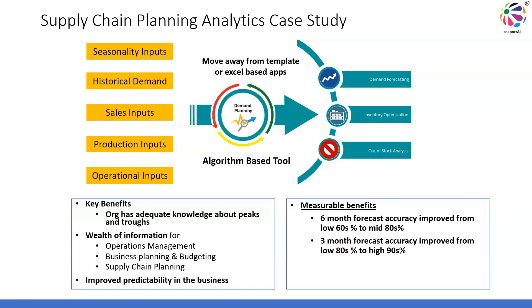Even if you have a hundred or a thousand people working in such a process, the demand planning will always fall short. Low 60s is definitely not acceptable. What does a 60% forecast accuracy mean? It means that if I say 100 cars will be sold six months from now, what actually got sold was either 60 or 140. That is the level of deficiency that existed in the forecasting process.